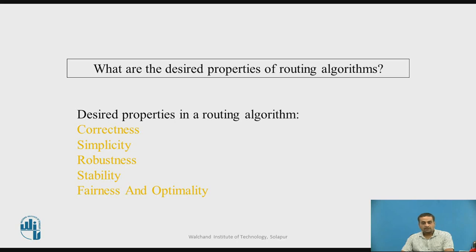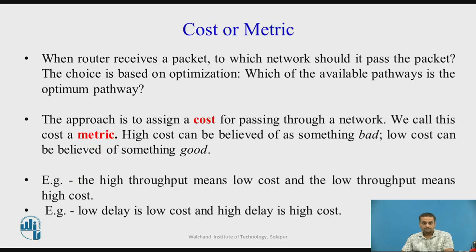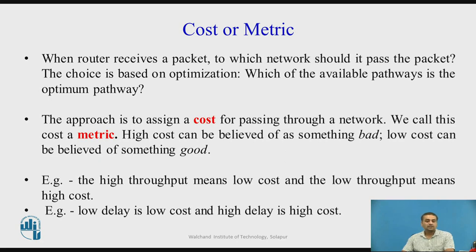Today we will focus on the optimality principle. Before proceeding, we should first know what a metric or cost associated with the network is. We know a network consists of many routers. Whenever a router receives a packet from one of its inputs, it should know to which network the packet should be forwarded, or through which network it should be forwarded to the destination. This forwarding decision is based on optimization.